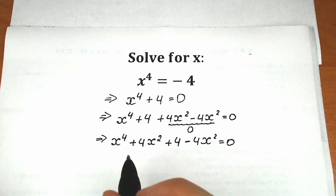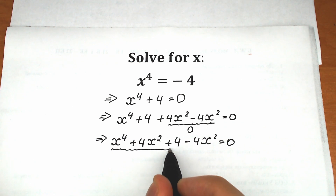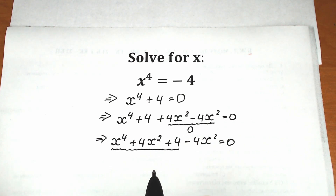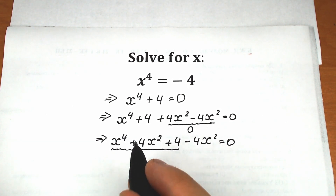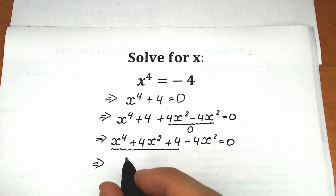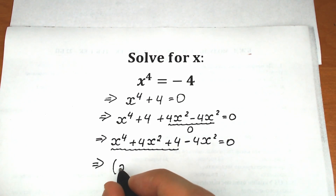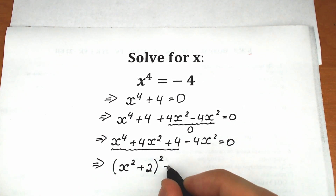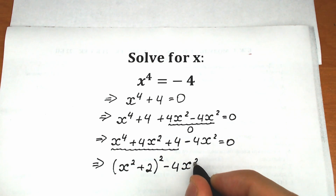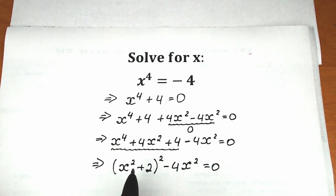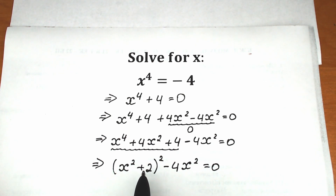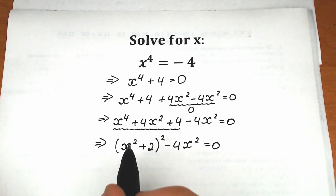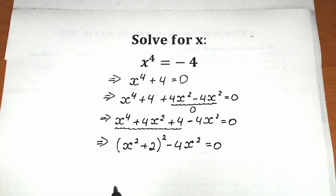Now here's a really interesting moment: the first three terms form the formula (x squared plus 2) to the second power. For those who don't understand, you can expand it: x to the fourth plus 2 times 2 gives 4x squared, plus 4 — this is a classic school identity. We still have minus 4x squared equal to zero.